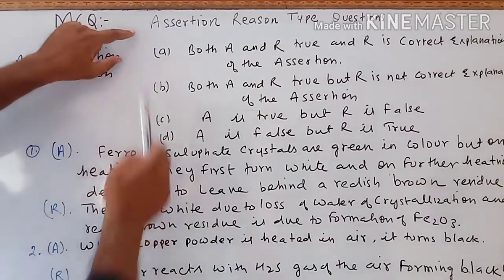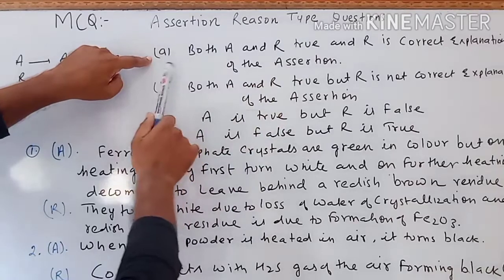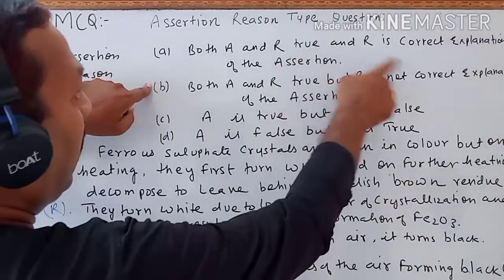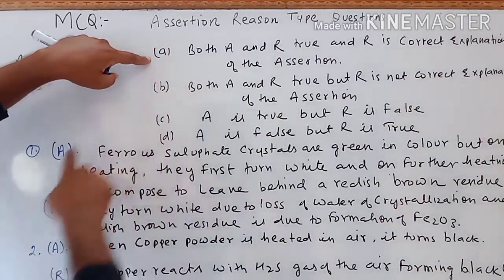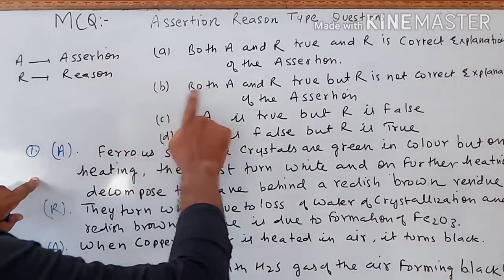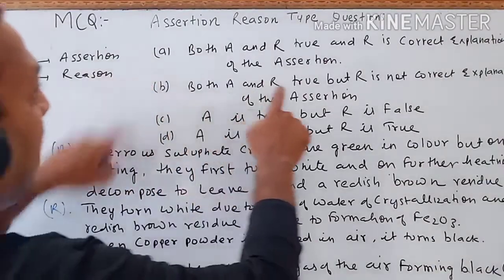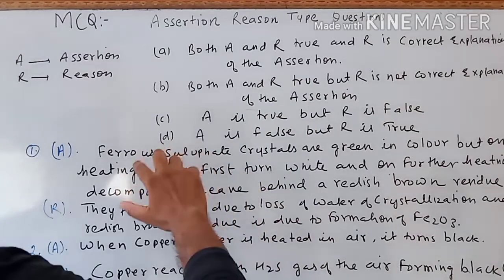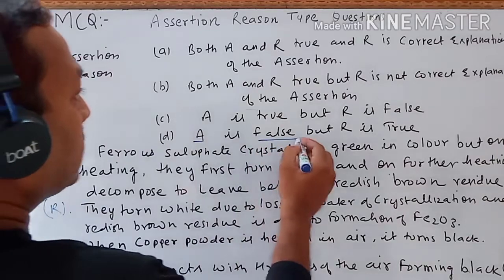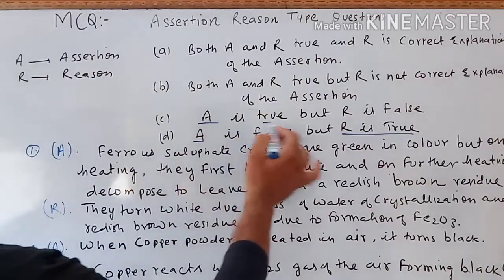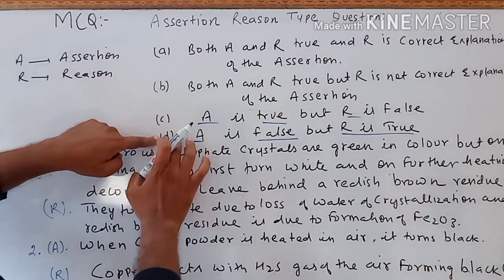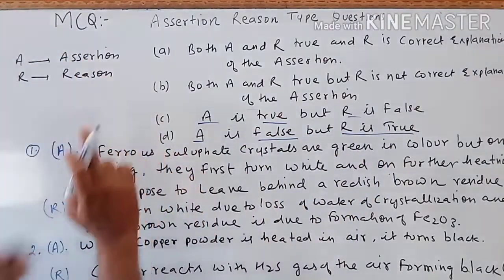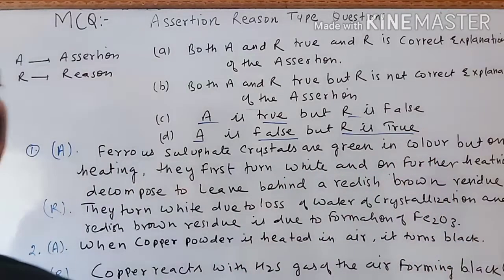In the Assertion-Reason type question, we get a paragraph with some options. Option A means both Assertion and Reason are true and R is the correct explanation of the Assertion. Option B means both A and R are true but R is not the correct explanation of the Assertion. Option C means Assertion is true but Reason is false. Option D means Assertion is false but Reason is true.